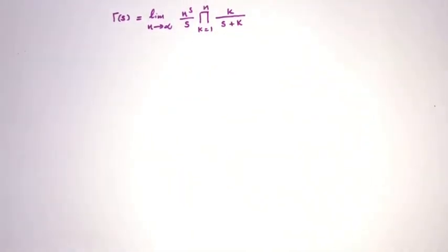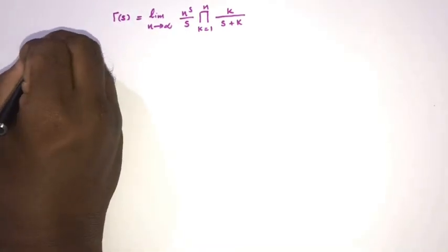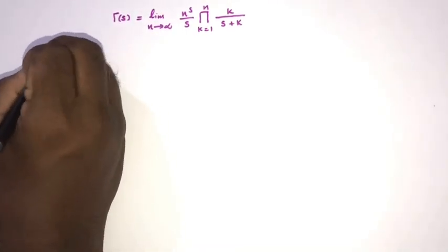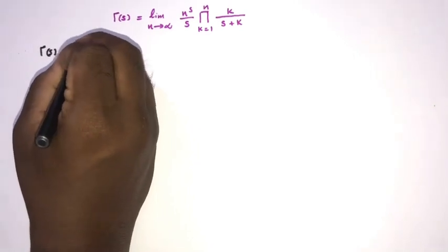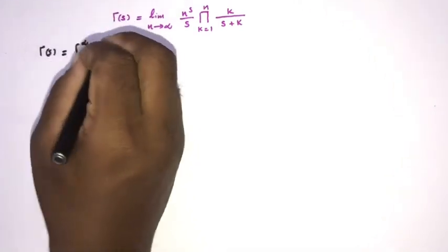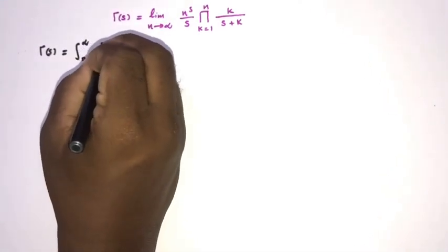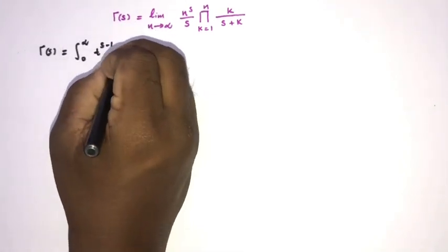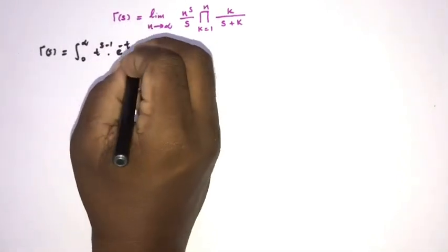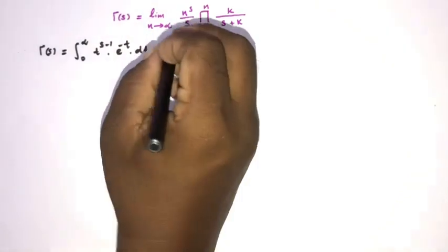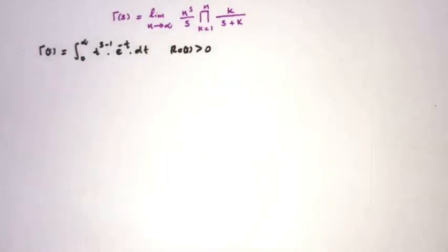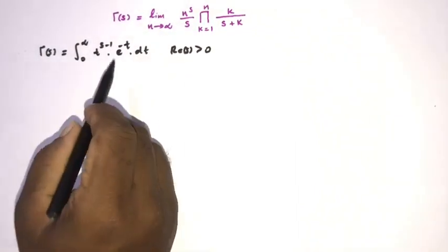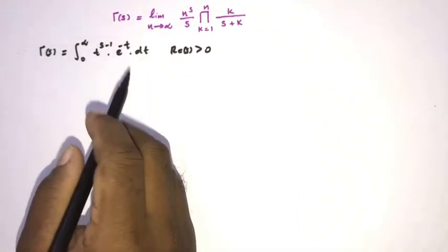For the first method, I am going to use the definition of the gamma function. We know gamma of s is equal to the integral representation: integral from 0 to infinity of t^(s-1) times e^(-t) dt, where the real part of s is greater than 0.